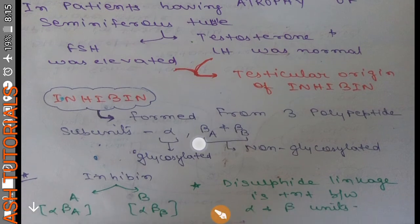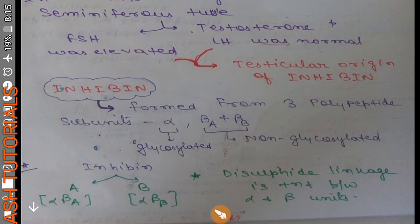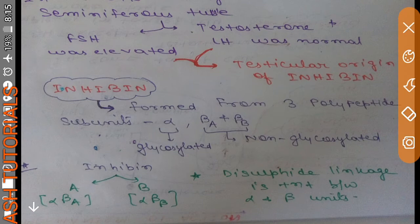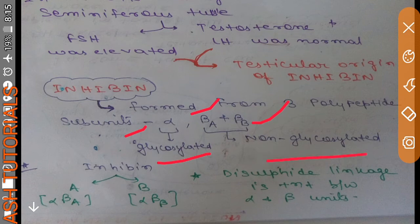Now coming to the general introduction of inhibin. Inhibin is formed from tripeptides — that is an alpha subunit, beta A, and beta B. This alpha subunit is usually glycosylated, while beta A and beta B are non-glycosylated. Inhibin is basically of two types: inhibin A and inhibin B. Inhibin A is formed by alpha combining with beta A.